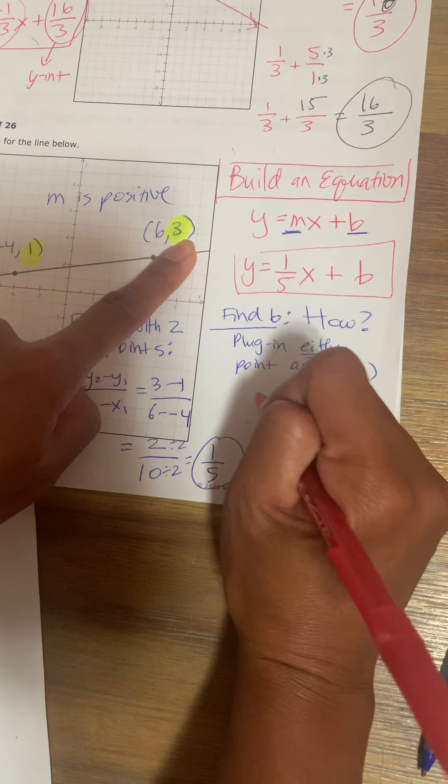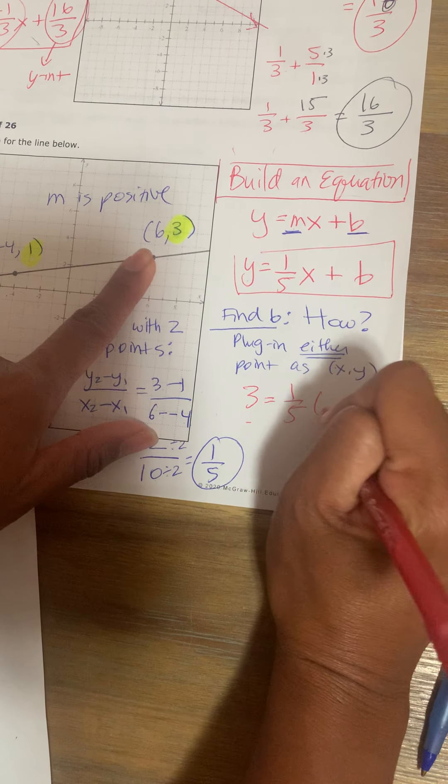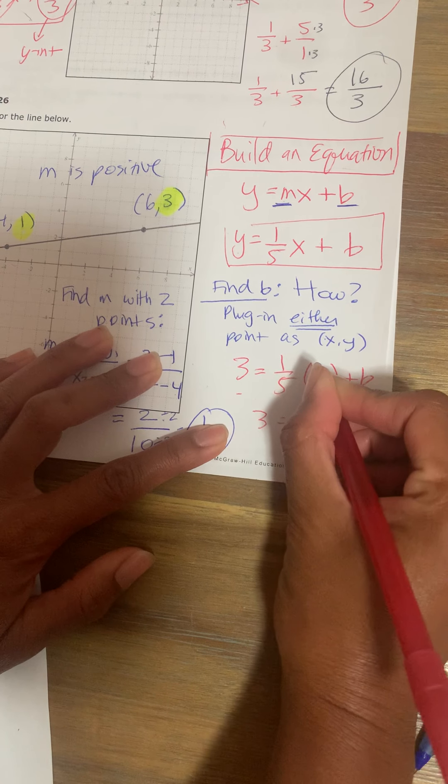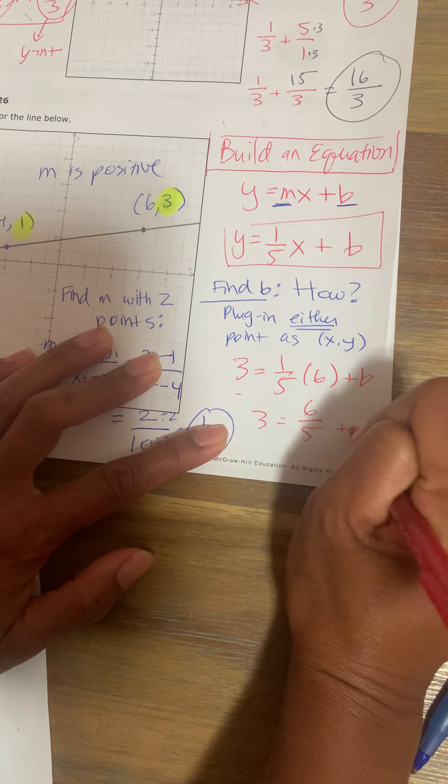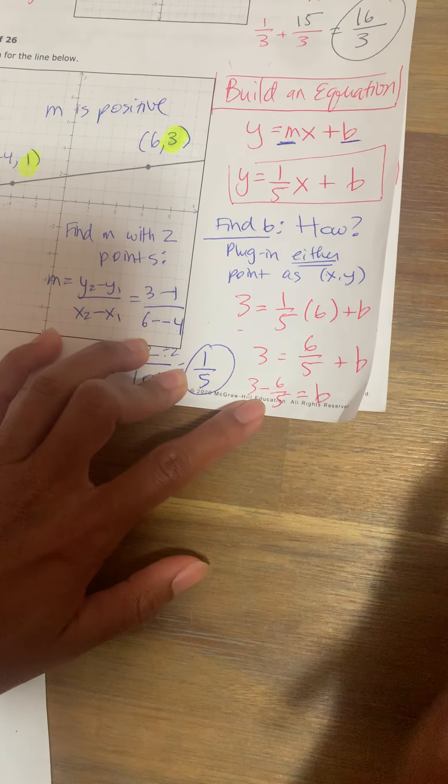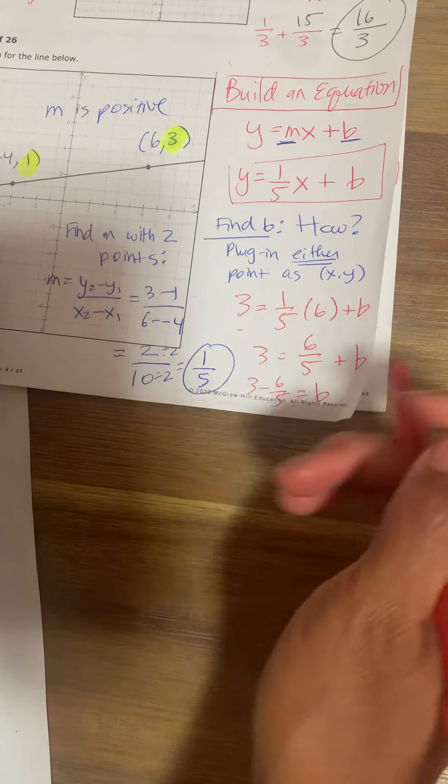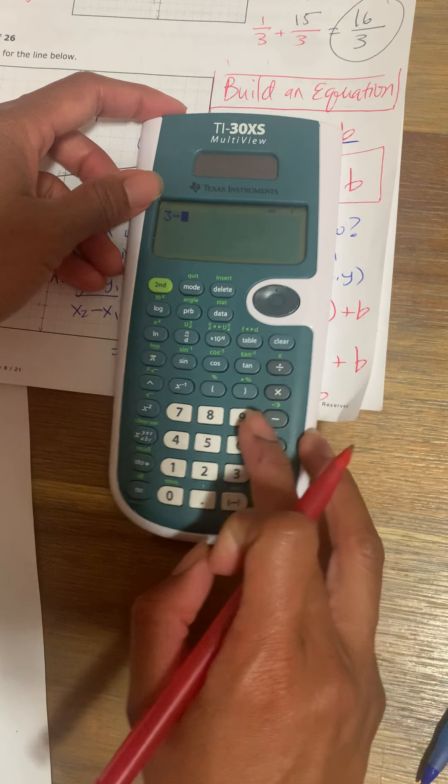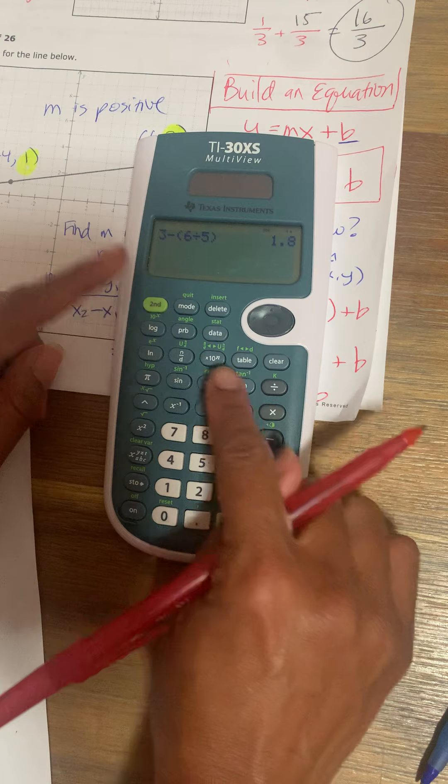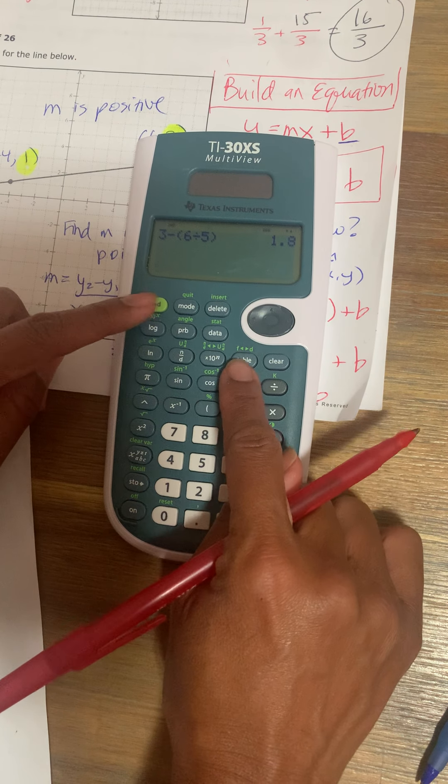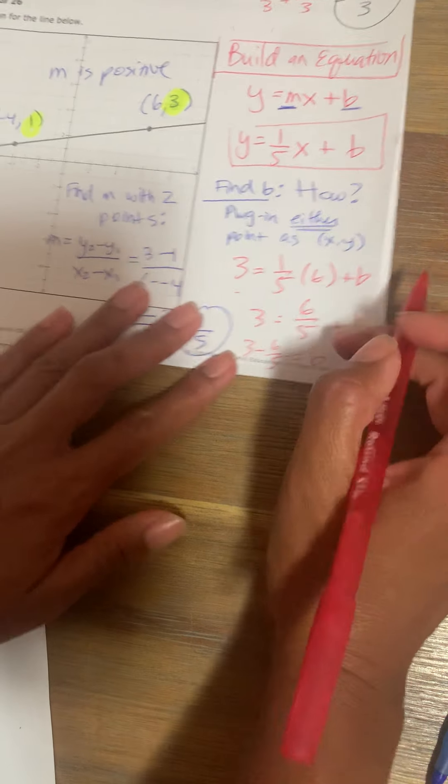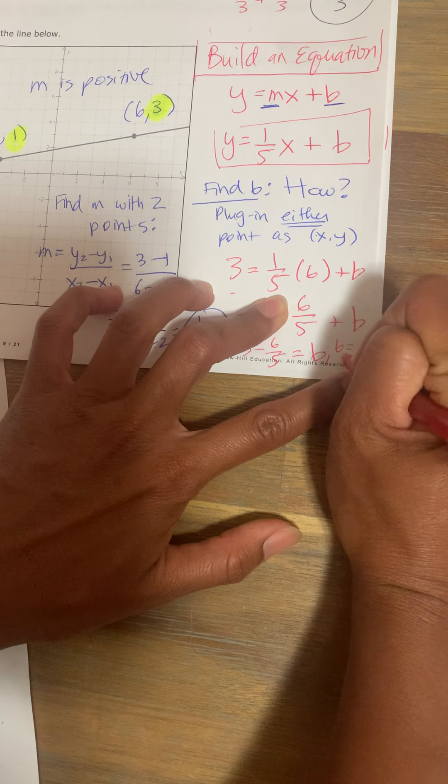So the y is a 3 and the x is a 6. I'm going to solve for b. I get 3 is equal to 1 fifth times 6. The 6 is in the numerator, so I get 6 over 5 plus b. To get b sitting by itself, I need to subtract 6 fifths on both sides. So 3 minus 6 fifths. You could do it by hand, or you could use your calculator. I end up getting 1.8. But I want to write this as a fraction, so I'm going to convert decimal to fraction and get 9 over 5. So b is equal to 9 over 5.